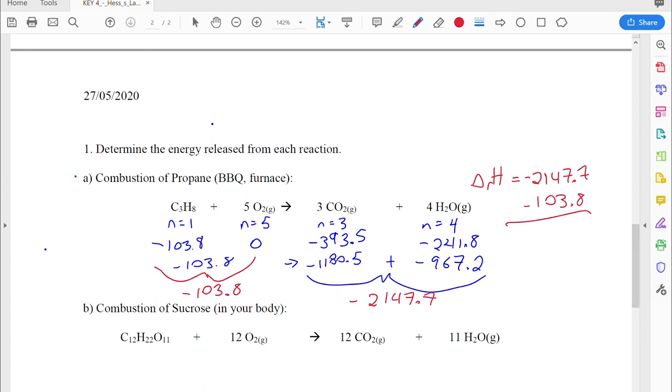Notice when I'm putting this into my calculator, I have to subtract these two numbers. So I have the negative number and then minus the negative of 103.8. So be really careful. You don't drop any of the minus signs. So I get negative 2043.9.